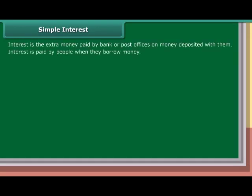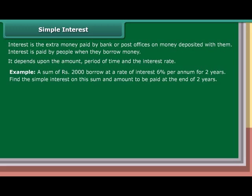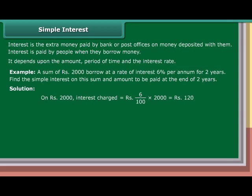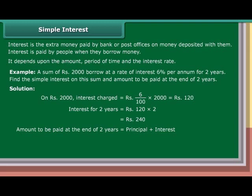Simple interest: Interest is the extra money paid by a bank or post office on money deposited with them. Interest is also paid by people when they borrow money. It depends upon the amount, period of time, and the interest rate. Example: A sum of Rs. 2,000 borrowed at a rate of interest of 6% per annum for 2 years. Interest charged is equal to 6 upon 100 into 2,000, which is equal to Rs. 120. Interest for 2 years is equal to Rs. 120 into 2, which is equal to Rs. 240. Amount to be paid at the end of 2 years is equal to principal plus interest, which is equal to Rs. 2,000 plus Rs. 240, equal to Rs. 2,240.